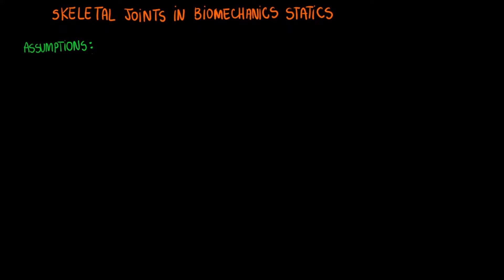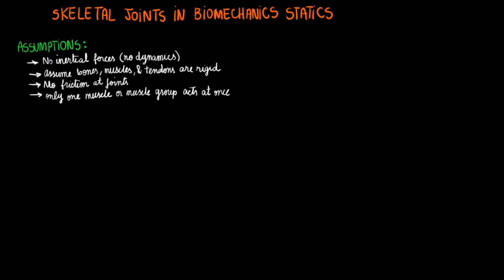Since we will deal with static systems, we can assume no inertial forces are present and ignore dynamics. We can also ignore the fact that muscles, bones, and tendons actually deform and assume that they are rigid bodies. We will also assume that there is no friction at the joints we work with, and assume that only one muscle or muscle group is ever acting, when in reality multiple muscles act in coordination.